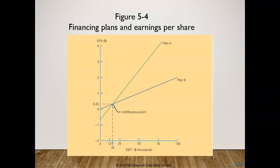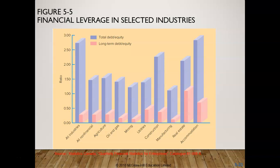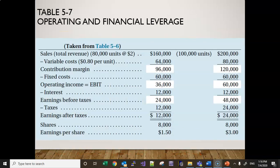Looking at financial leverage across selected industries in Canada, the oil and gas industry has a lower long-term debt-to-equity ratio compared to utilities. The reason is that utility companies tend to have more certain cash flows, allowing them to take on more long-term debt.